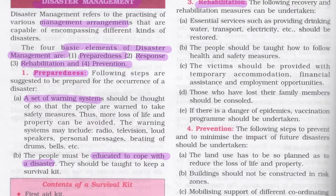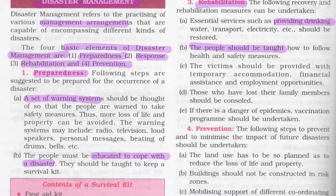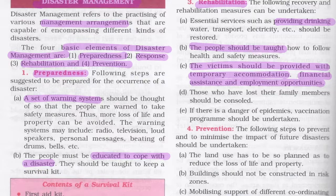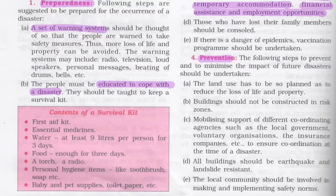Recovery and rehabilitation measures include restoring essential services like drinking water, transport, and electricity. People should be taught health and safety measures. Victims should be provided with temporary accommodation, financial assistance, and employment opportunities. Those who have lost family members should be counseled. If there is danger of epidemics, vaccination programs should be undertaken.